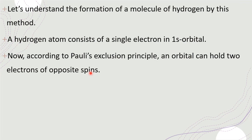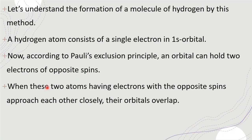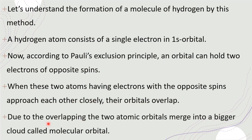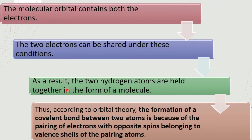Here the structure-of-atom rules are taken care of. When these two atoms having electrons with opposite spins approach each other closely, their orbitals overlap. Due to the overlapping, the two atomic orbitals merge into a bigger cloud called molecular orbital with two electrons. The molecular orbital contains both electrons. One hydrogen comes with one electron, and the other hydrogen comes with its one electron. When they overlap and merge the electronic cloud, it becomes a hydrogen molecule, and the orbital is called a molecular orbital.